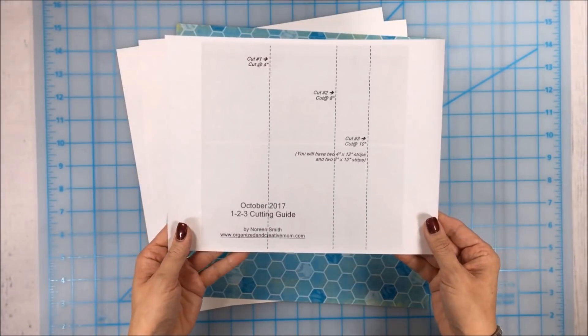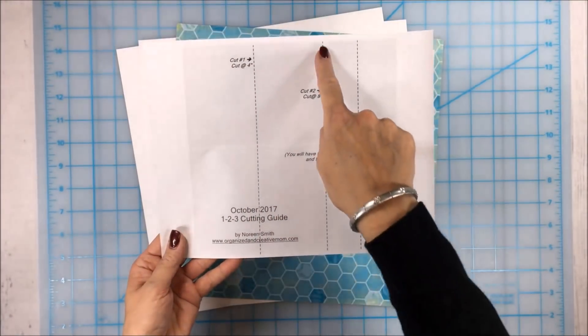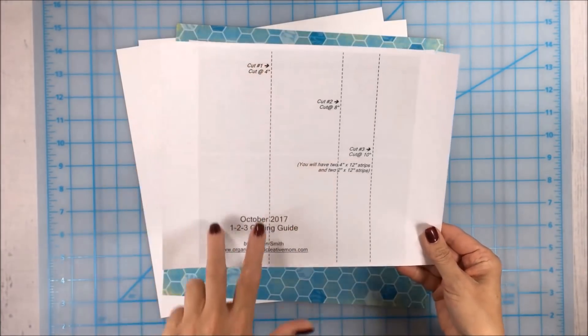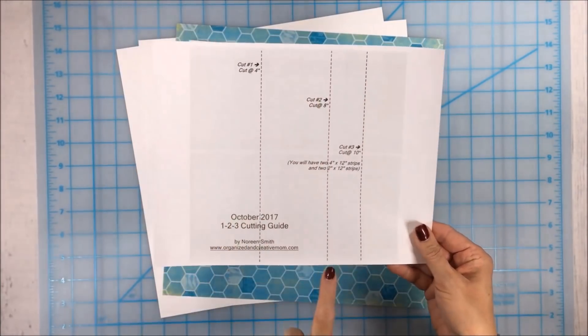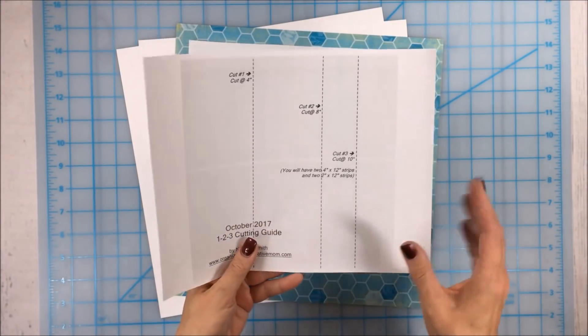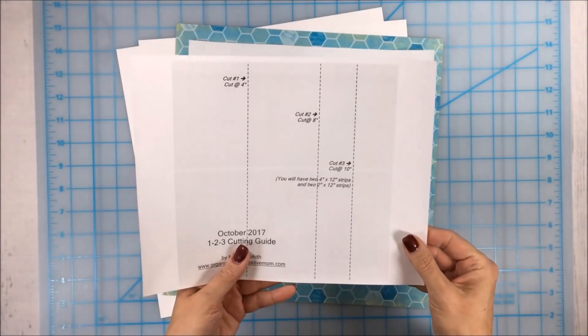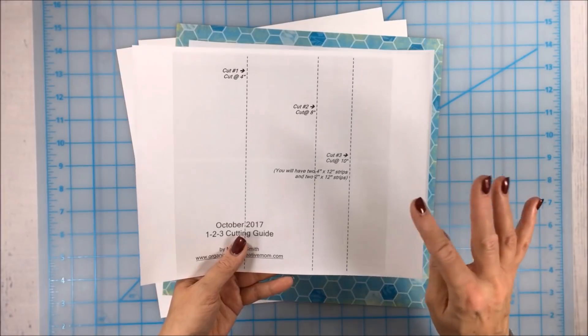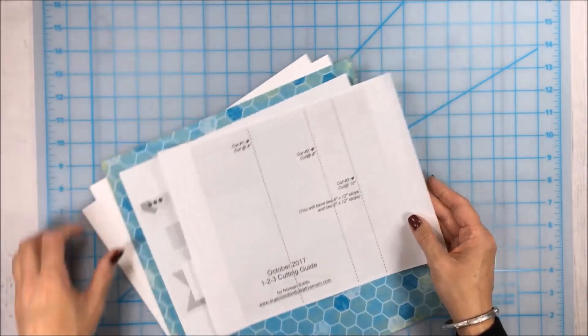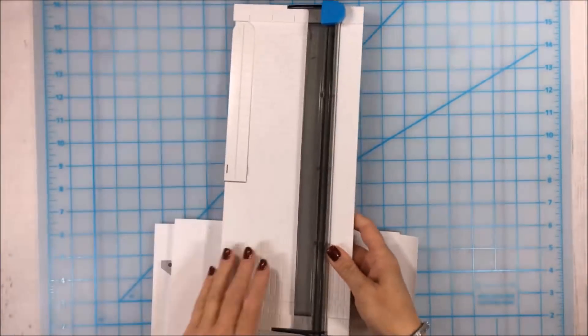The cutting guide is really straightforward this month. We're going to cut our double-sided patterned paper at four inches, eight inches, and ten inches. We'll cut it at four, move it aside, cut again at four. That gives us two four by twelve inch strips. Then the remaining four by twelve inch strip, we're going to cut in half at two inches to give us two two by twelve inch strips.